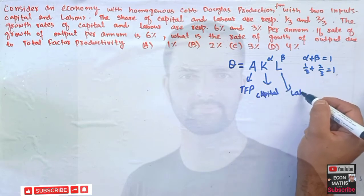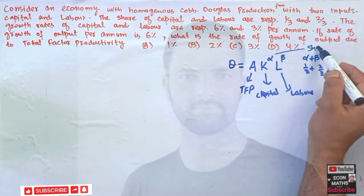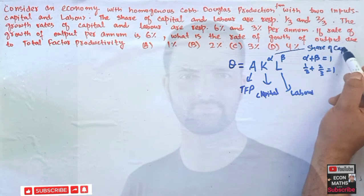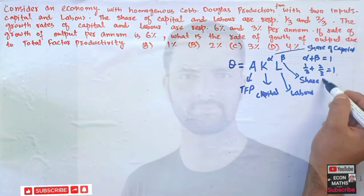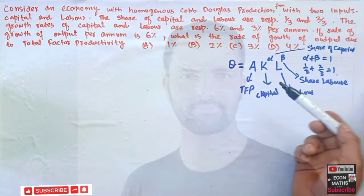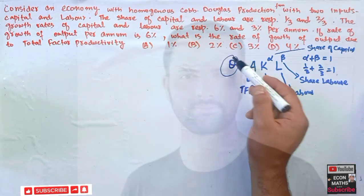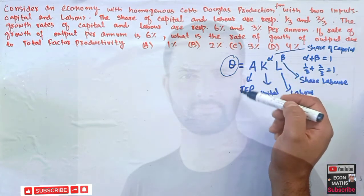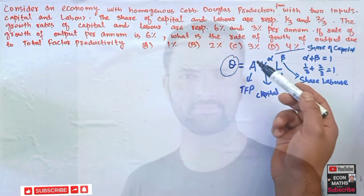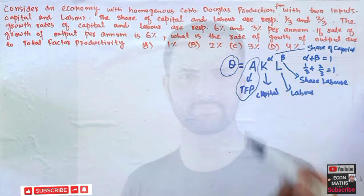Alpha represents the share of capital in total output, and beta represents the share of labor. What we need to find is the change in total output that is not explained by capital and labor — that is, how much of the output change is due to total factor productivity.